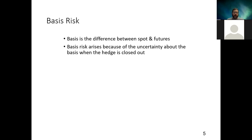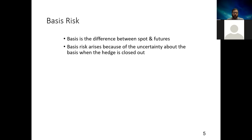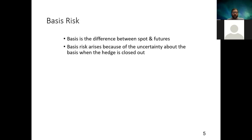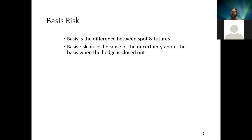One of the things that comes up whenever we're doing hedges is basis risk. Basis is defined as the difference between the spot and the future. There are about three different places this can come from. First, you cannot actually buy a hedge for exactly what you want — there can be things that are similar but not exactly the same, and because of that slight difference you've got basis risk, since your underlying is necessarily different from the futures contract.